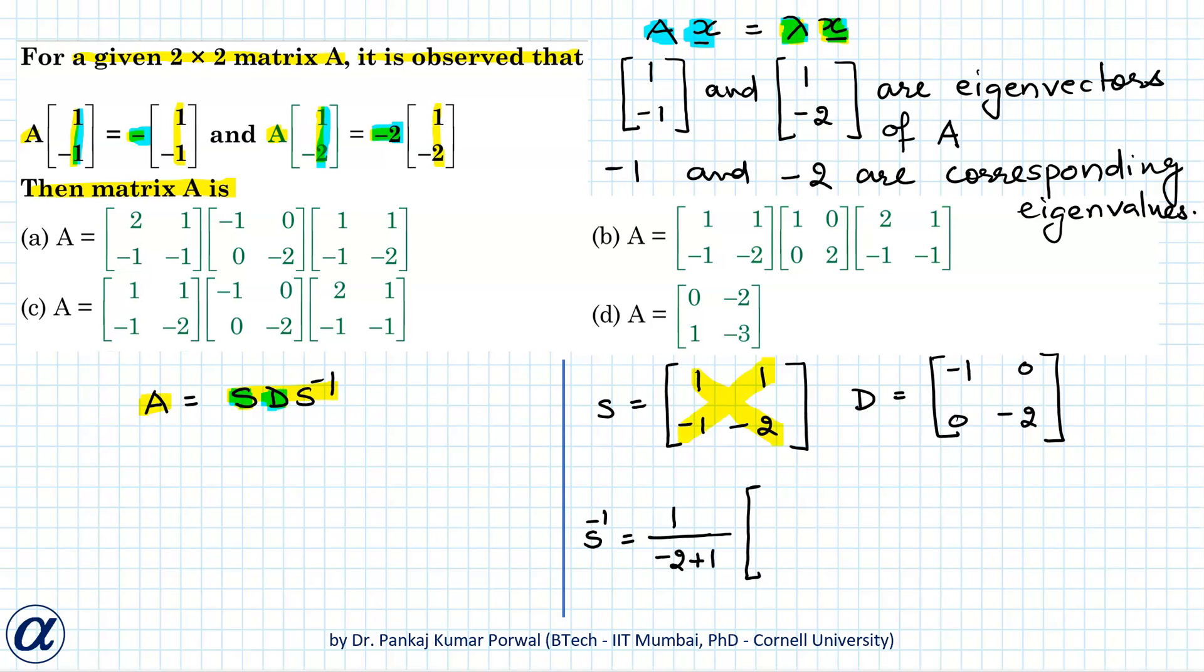That I can multiply inside the matrix, so that will give me [[2, 1], [-1, -1]]. So I have S, D, and S inverse, so my matrix A will be...